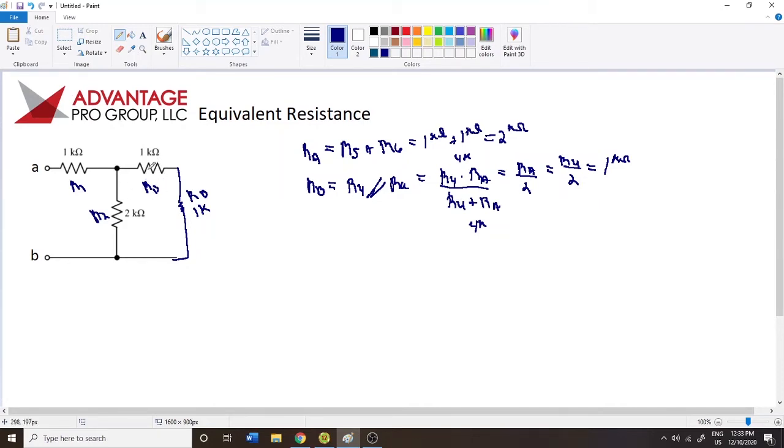So now we're back to here. This is R3, R3 plus RB here, and that's going to be RC. So RC is going to be equal to R3 plus RB, which is equal to 1K plus 1K, which is equal to 2K. So now we delete this section again, and we're going to put the resistor right here. This is 2K, and this is called RC.